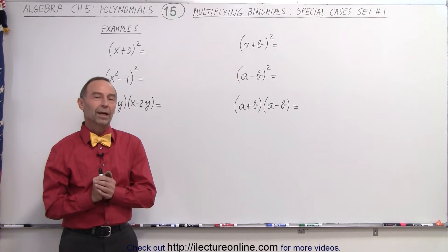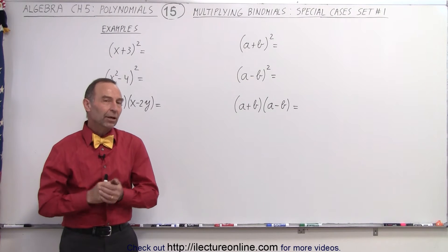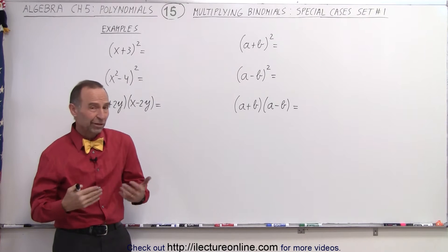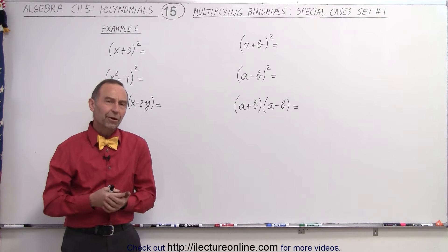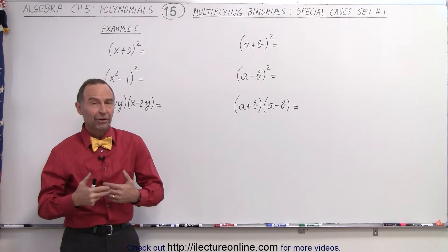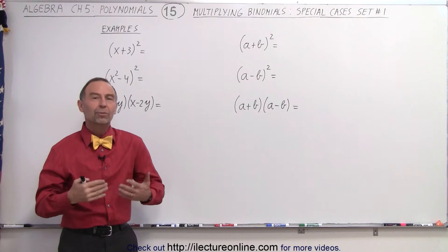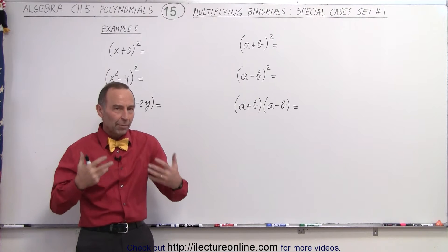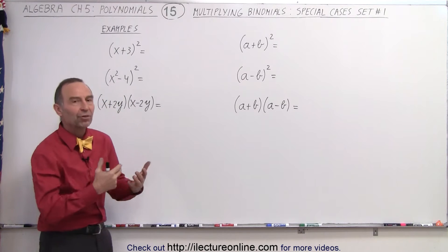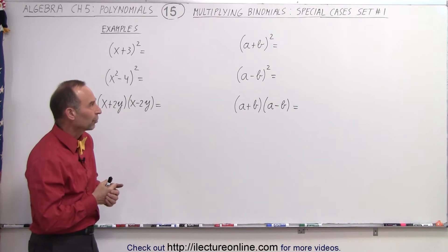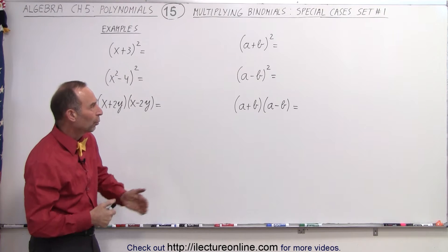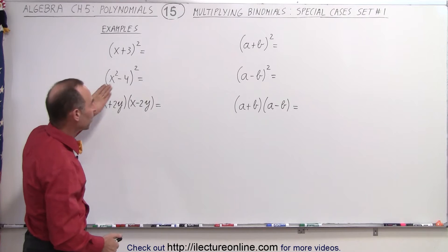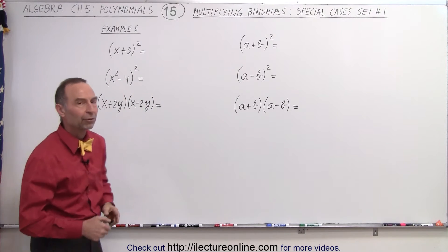Welcome to ElectronLine. In algebra, there are certain types of products of polynomials, or in this case binomials, that are very unique. They happen very often, and so we consider them special cases that we should pay special attention to and try to memorize. So, we have some theoretical ways of approaching them, and then we'll show you some examples that apply what we have learned.